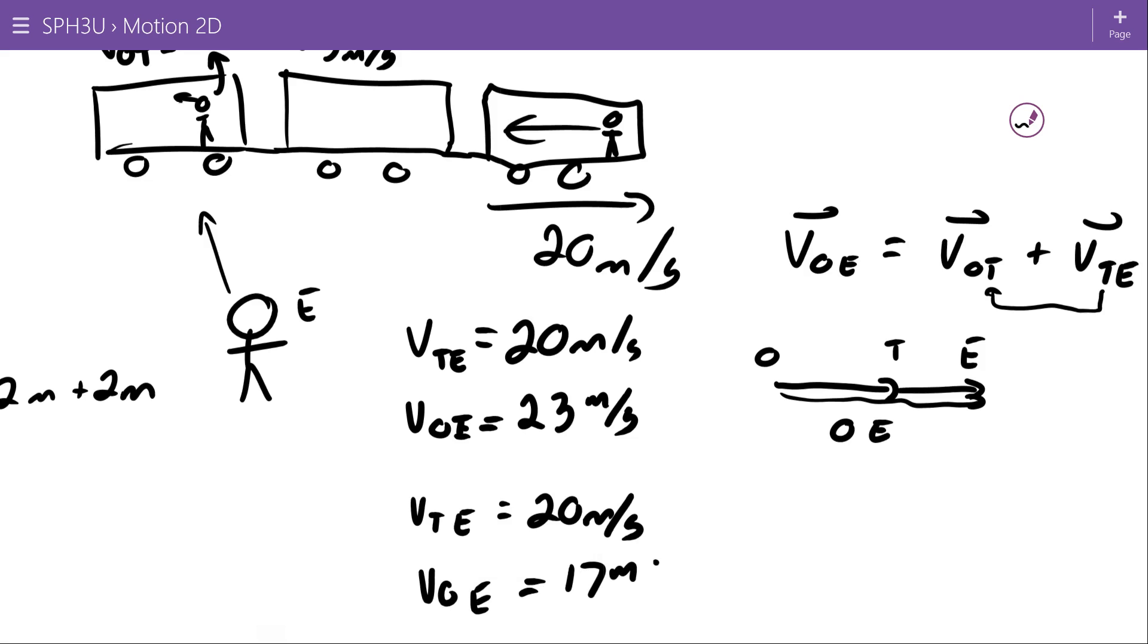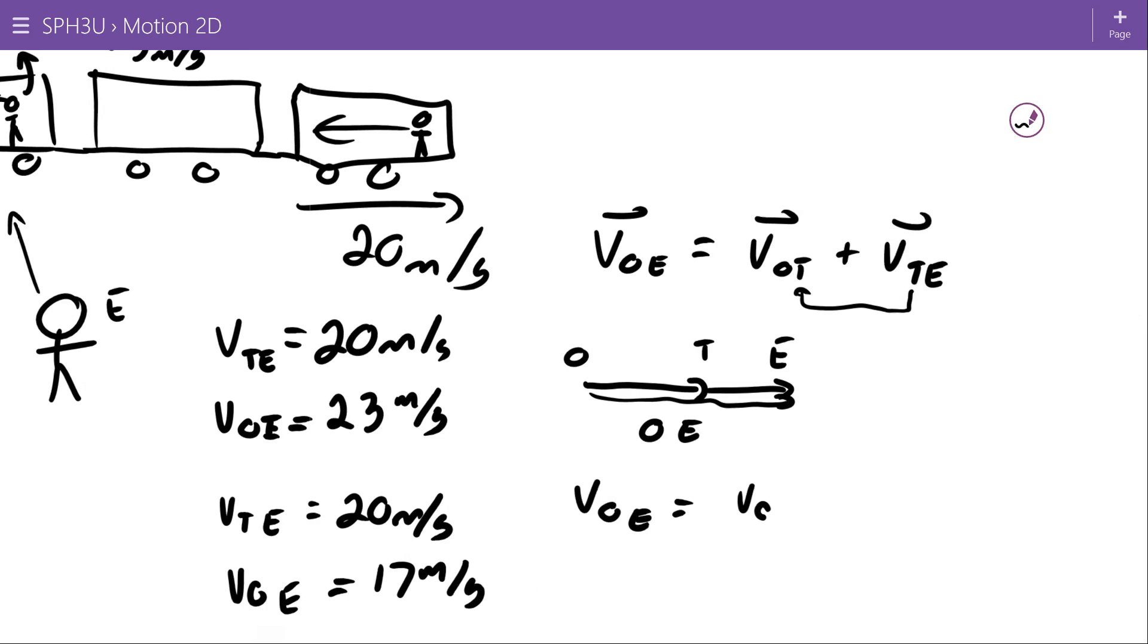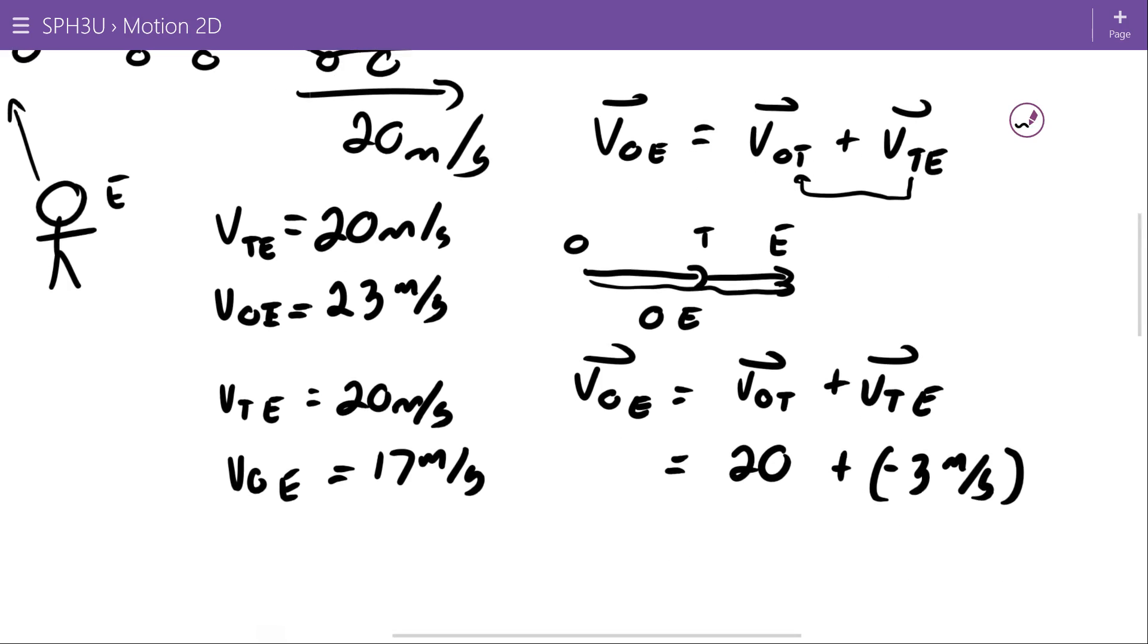If he looked, you'd see 17 meters per second. And that's because the velocity of the object relative to the earth would be the velocity of the object relative to the train plus velocity of the train relative to the earth, which is 20 plus a negative 3 meters per second. And since this is a vector equation, we keep those signs in. And that's how we end up with 17 meters per second.